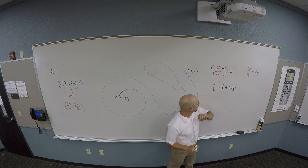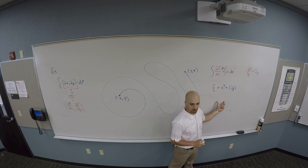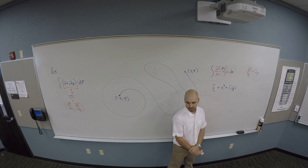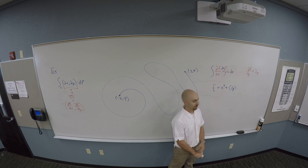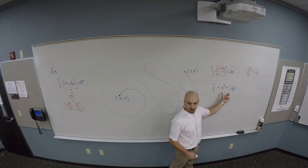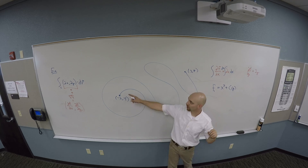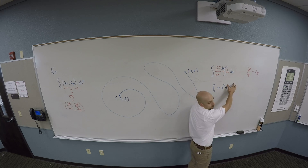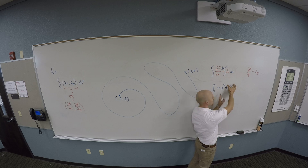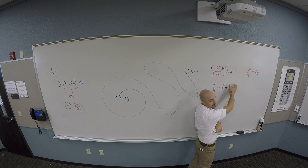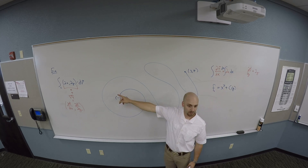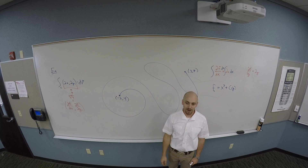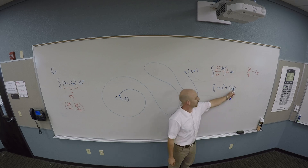If I take the derivative of X squared plus C(Y) with respect to Y, what do I get? It's just going to be C'(Y) — so your first guess would be to say C'(Y) is probably zero. But if I take that derivative with Y, I get zero. Is that what I was supposed to get over here? No. So I need to deal with that C(Y).